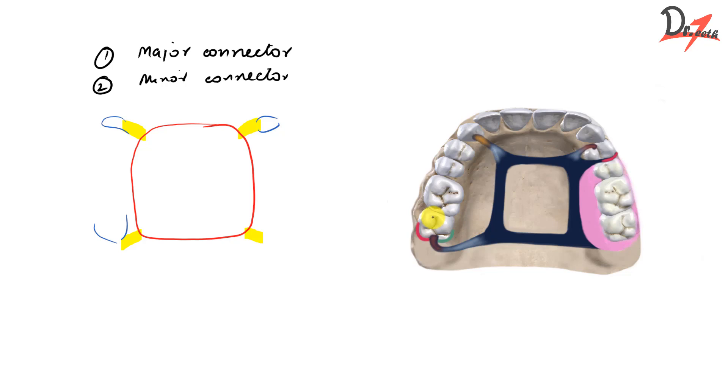And as you can see here, we have certain parts of the direct retainers. So if I try to label this, this will be the retentive arm. And this one in green, that will be the reciprocal arm. Just opposite to the retentive arm, we have the reciprocal arm. And here, this in brown, this is the rest. So all these three, they are the direct retainers. So the direct retainers we can see here in the mess I have created.